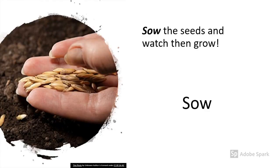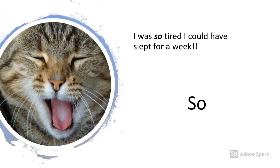First, we have 'sow' (S-O-W). This means to plant a seed by scattering it in or on the earth. For example: 'Sow the seeds and watch them grow.' Next, we have 'so' (S-O). This can mean 'very' or 'extremely.'